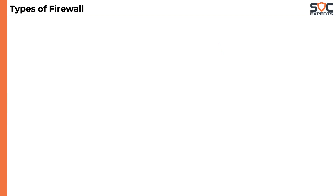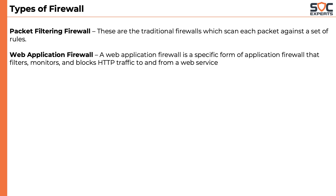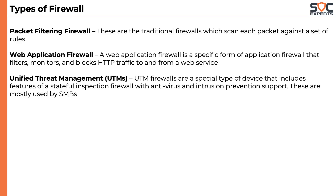Finally, let's close the discussion by knowing about the different types of firewalls. First, we have the packet filtering firewall — these are traditional firewalls which scan each packet against a set of rules. We have the web application firewall, which is a specific form of application firewall that filters, monitors, and blocks HTTP traffic to and from a web service. Then we have unified threat management, or UTM — UTM firewalls are a special type of device that includes features of a stateful firewall with antivirus and intrusion prevention support. These are mostly used by SMBs, which stands for small to medium-sized businesses.